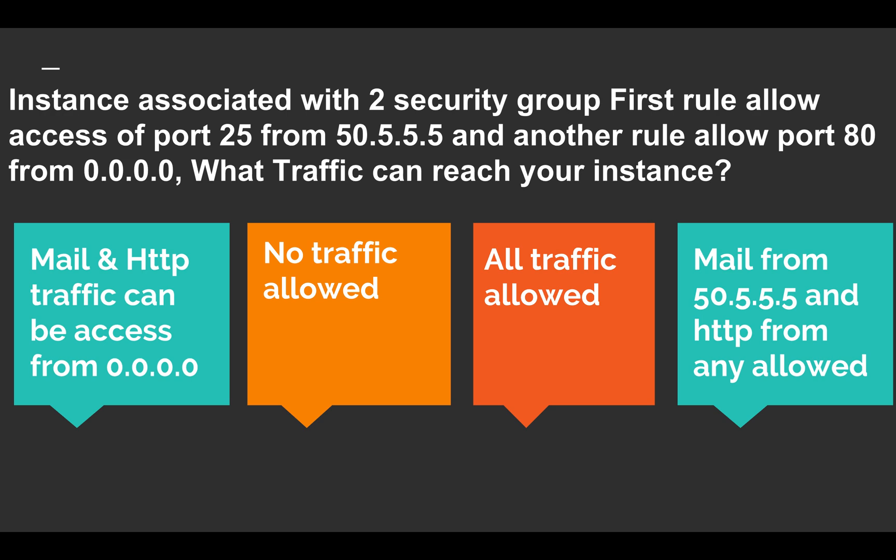Let's look at the options. Option one: mail and HTTP traffic can be accessed from any host 0.0.0.0. Option two: no traffic allowed. Option three: allow all traffic by default. Option four: mail from 50.5.5.5 and HTTP from any is allowed. We have two rules — source IP 50.5.5.5 for port 25, and 0.0.0.0 for port 80. The last option mentions mail traffic allowed from 50.5.5.5 and HTTP from any IP.